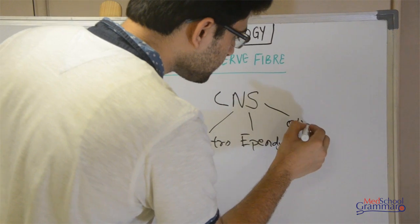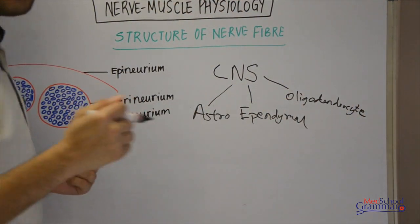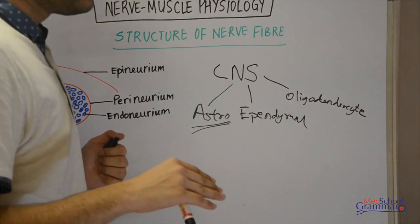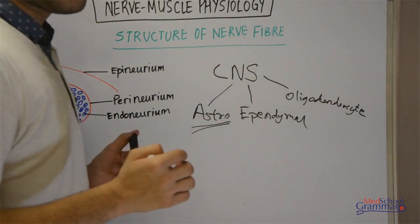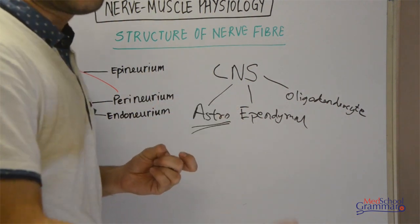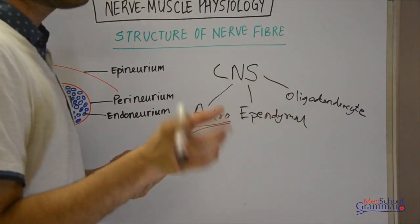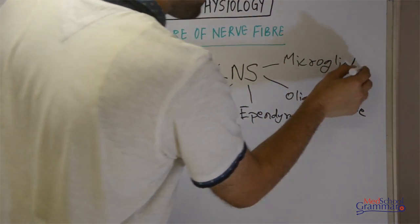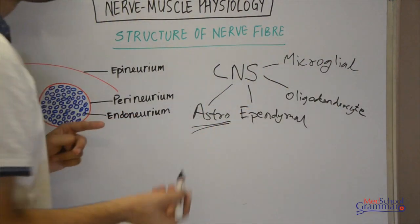The CNS also contains oligodendrocytes. Astrocytes form the blood-brain barrier. Ependymal cells are present at the ventricles of the brain and synthesize cerebrospinal fluid. Oligodendrocytes provide support and are named so because they have shorter dendrites. Additionally, microglial cells are present — they are the smallest type of cells in the CNS.